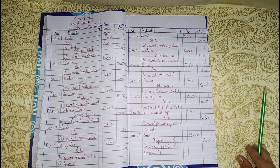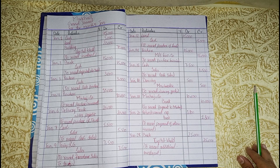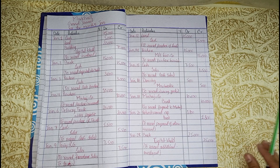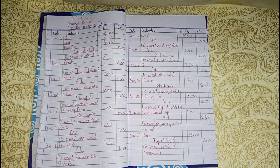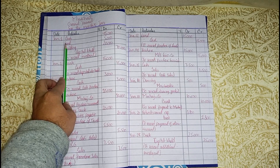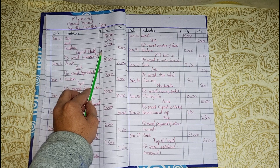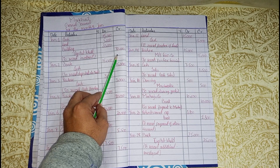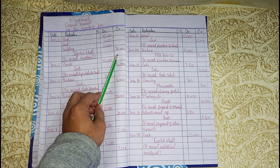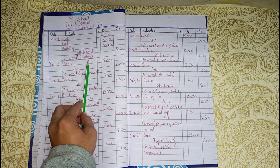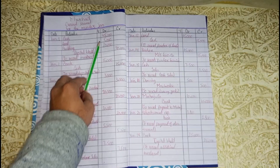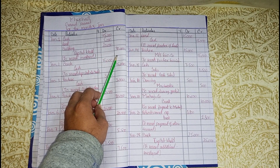The first entry says that Mr. Khalil invested a total amount of 70,000: cash 45,000, land value 5,000, and building value 20,000. So cash, land, and building go to the debit side. When capital is increased, it goes on the credit side. The total will be 70,000. Now we move to January 2.